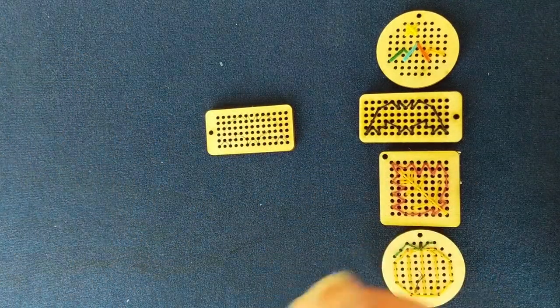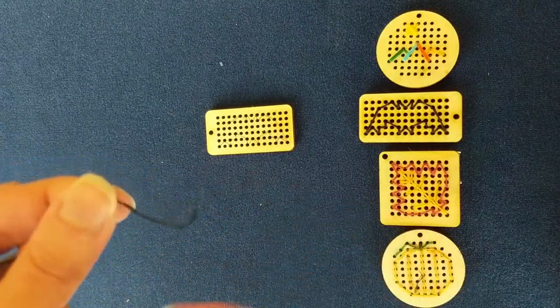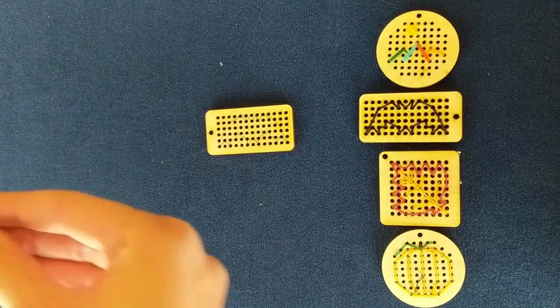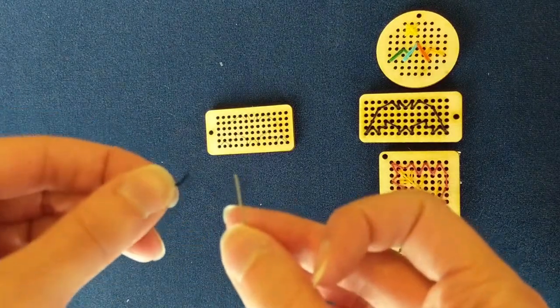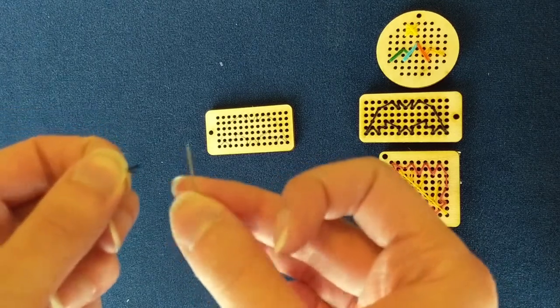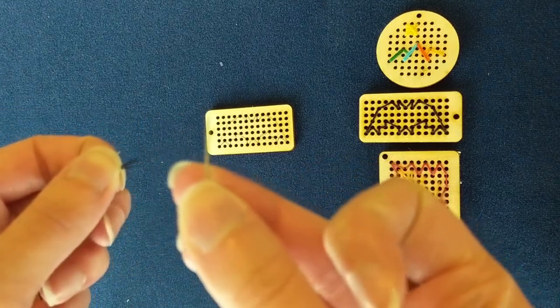So this first strand we're just going to thread directly onto our needle. Now if you haven't threaded a needle before, there's two ways to do it. One is just you take the thread, you dampen the end a little bit like with water or spit, and you stick it straight through the eye of the needle.